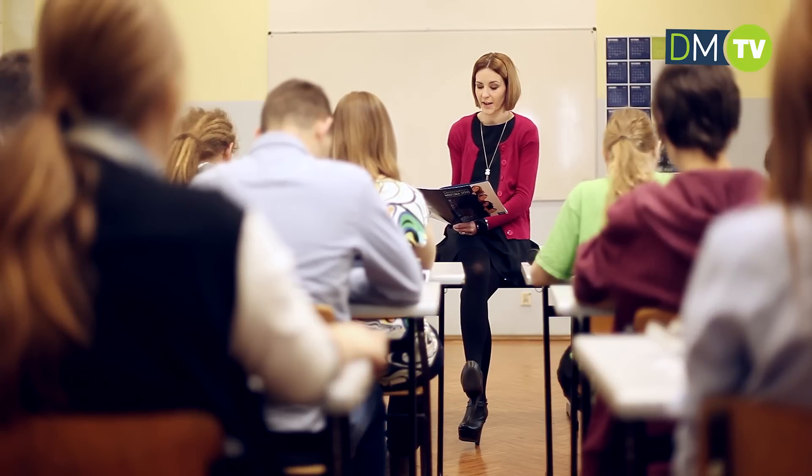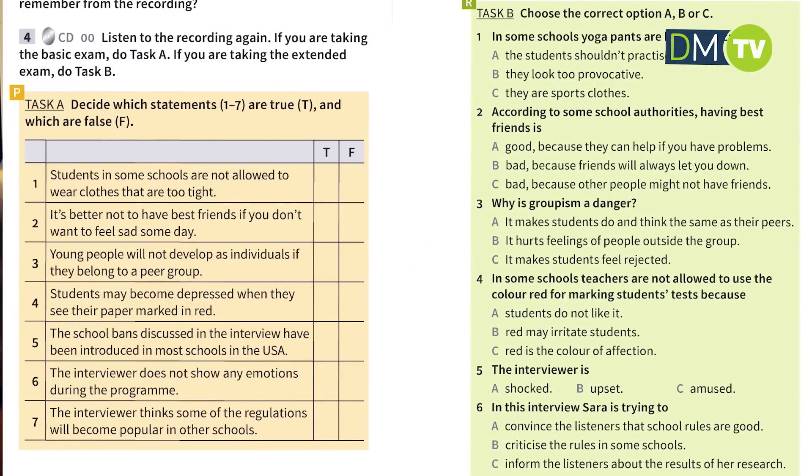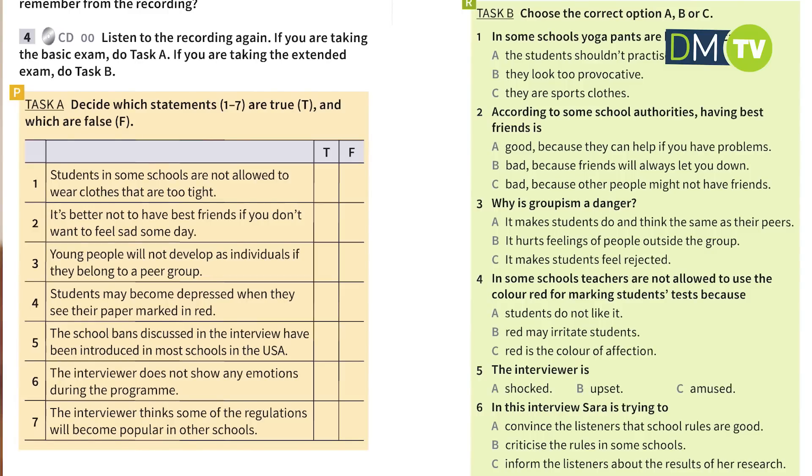And now we are going to listen to a recording about rules introduced in some schools. Before I play the recording, the basic level students are supposed to read sentences from task A on page 224, and the extended level students task B on the next page. After listening to the recording twice, group A are going to tell me if the sentences are true or false, and group B are going to give me the correct answers A, B or C. Both the basic and extended level students are working simultaneously — listening is the same for the whole group, however the tasks for each level of students are different. These are clever and convenient solutions for working with mixed level groups, aren't they?